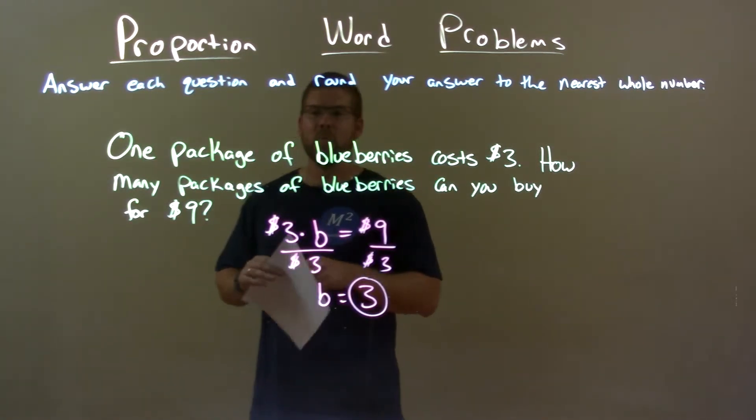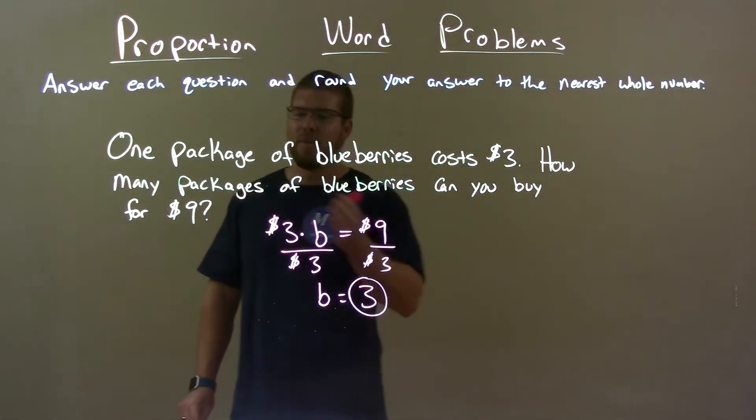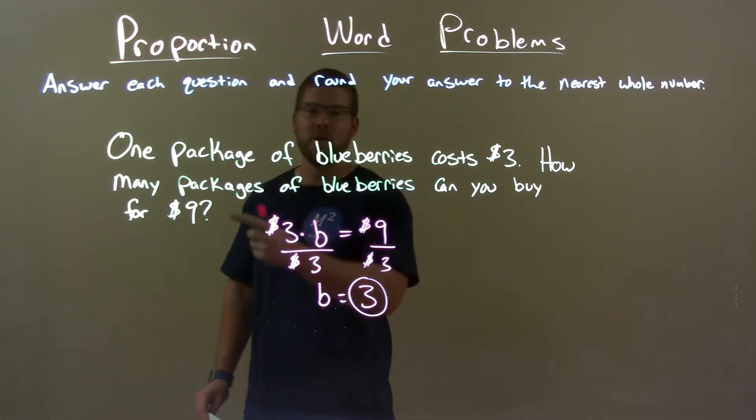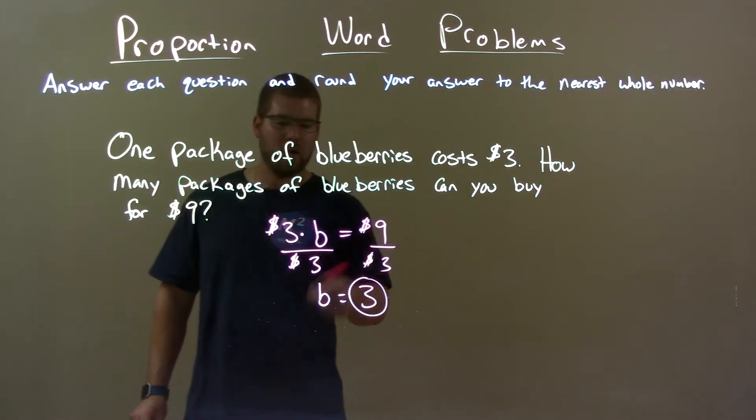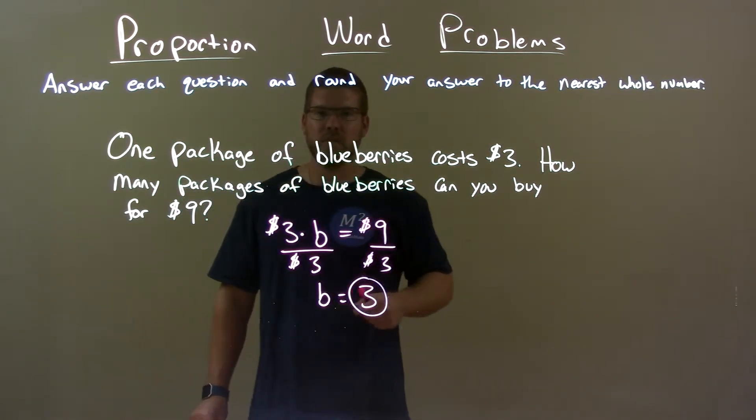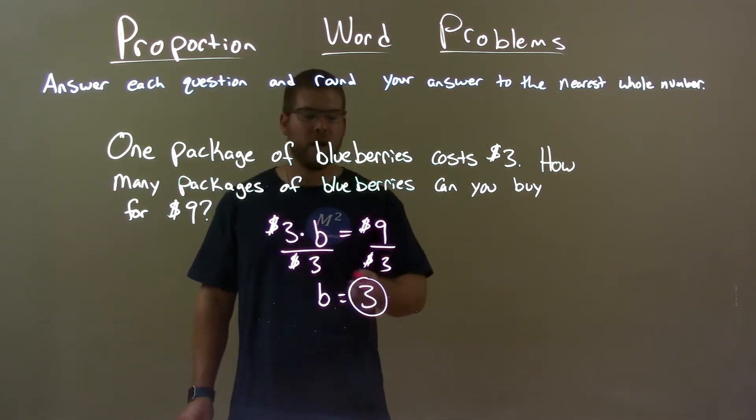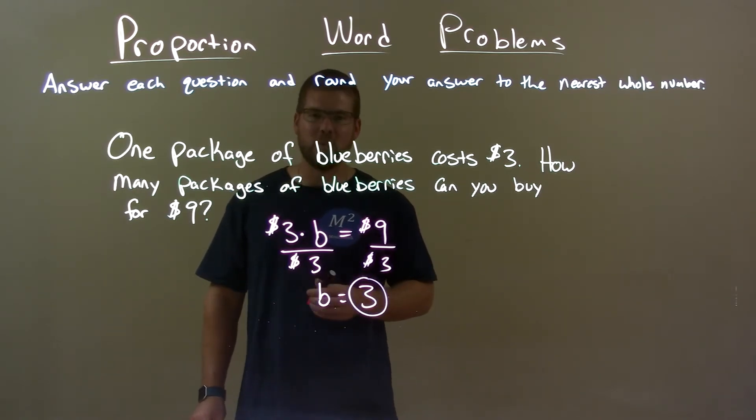Quick recap. We're given one package of blueberries costs $3. How many packages of blueberries can you buy for $9? We set up an equation: $3 times B equals 9, and we solved for B and got a final answer of three packages of blueberries.